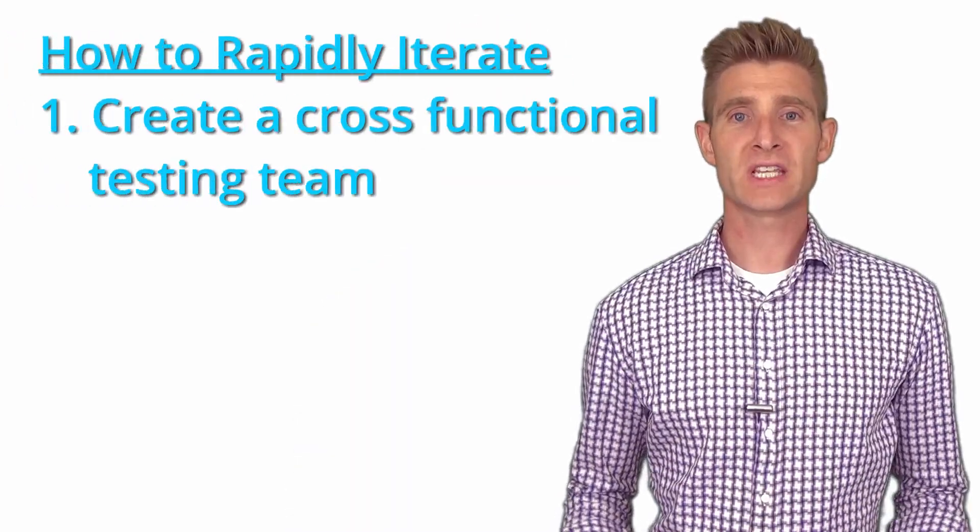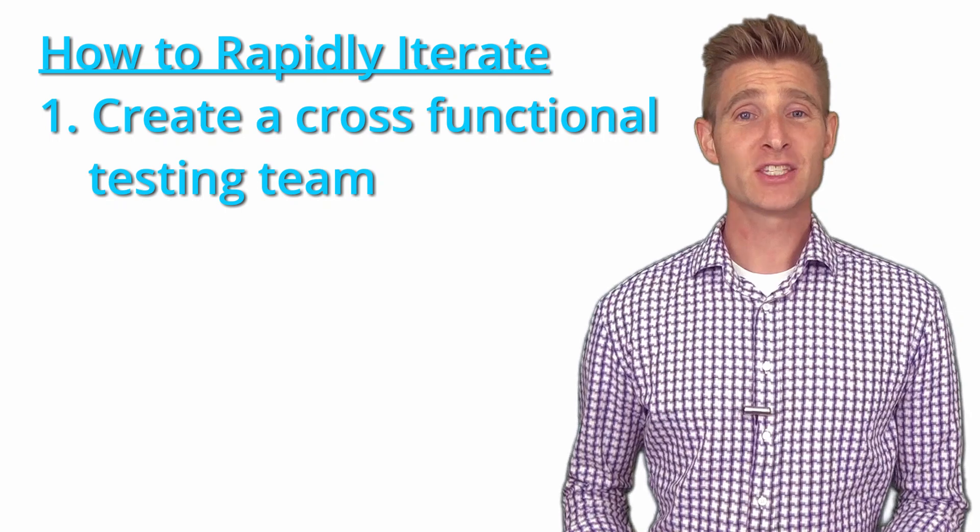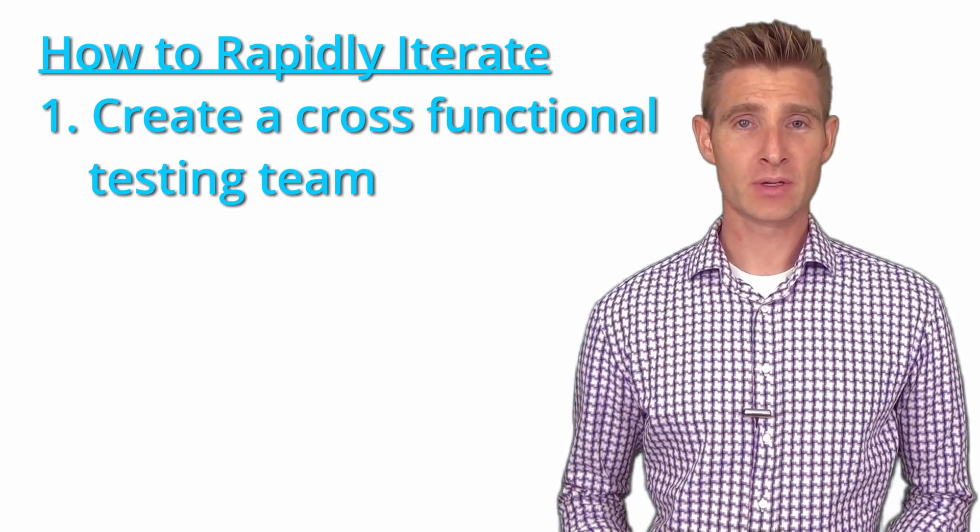So let's talk about four things you can do as part of your testing team to rapidly iterate better. The first and foremost thing is to create a cross-functional testing team — I have a whole video on this so I won't go into all the details, but you need a strategist, a developer, an executive sponsor, designers, QA, and project management. You need all roles represented from a good cross-functional team to be able to go quickly. If you don't have a team member represented, it's more likely you're going to go slow and not get that rapid iteration most companies want.